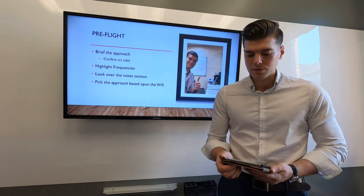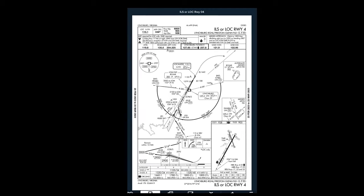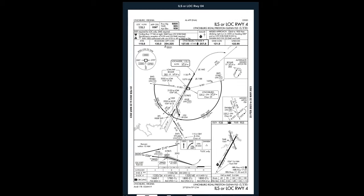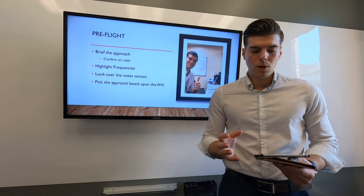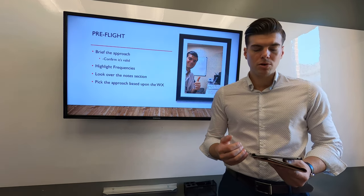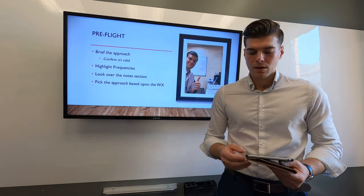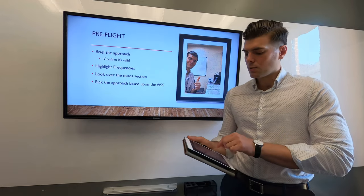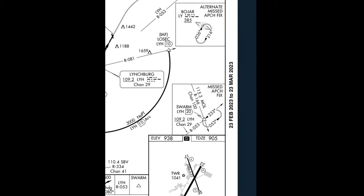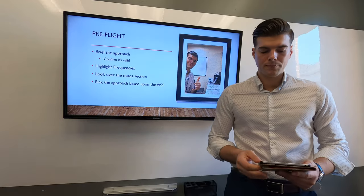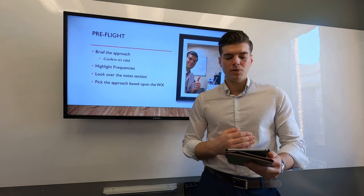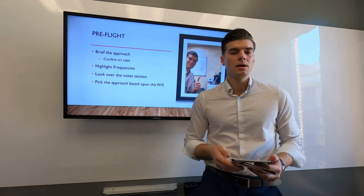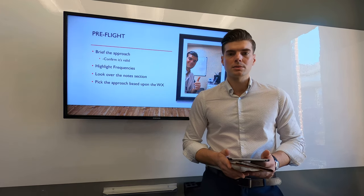The approach plate we're going to use today is the ILS for Runway 4 into Lynchburg. If you have ForeFlight, it will automatically update all approach plates to make sure they're valid, but to double check, zoom in along the edge of the approach plate and verify the date is current. Then work from the top of the plate down, looking for anything that might inhibit you from making this approach.